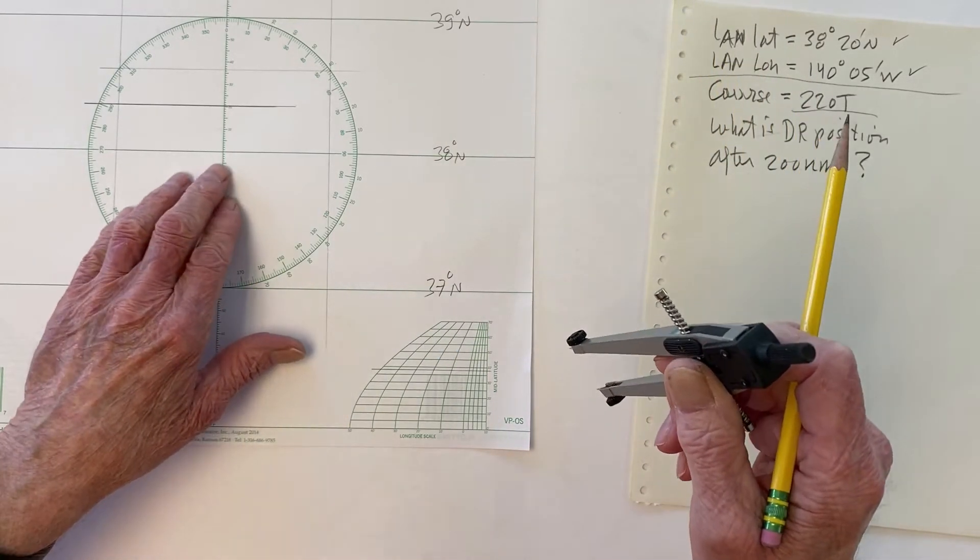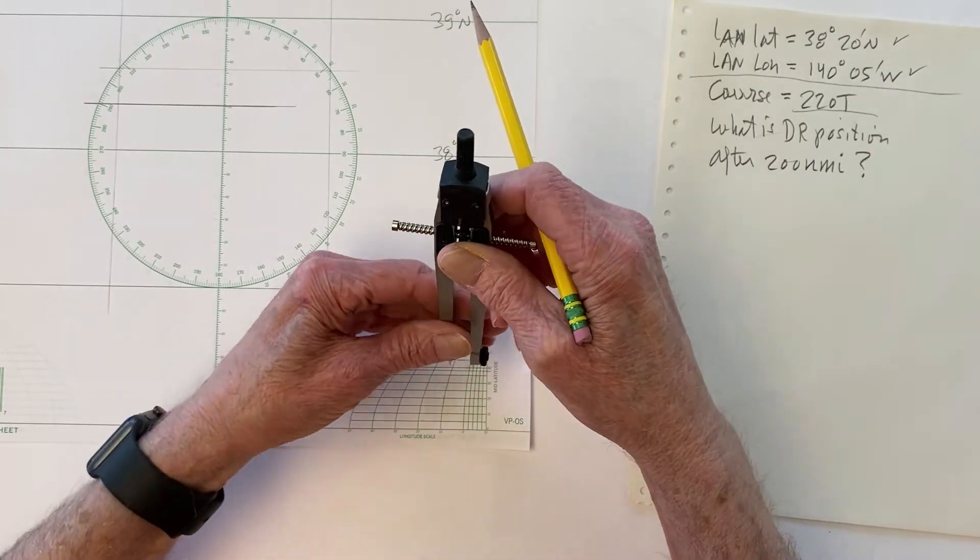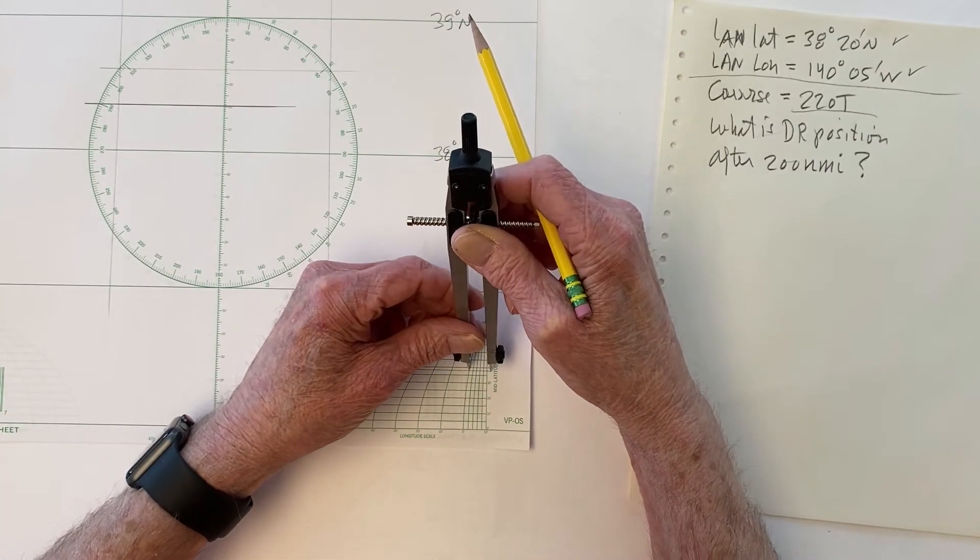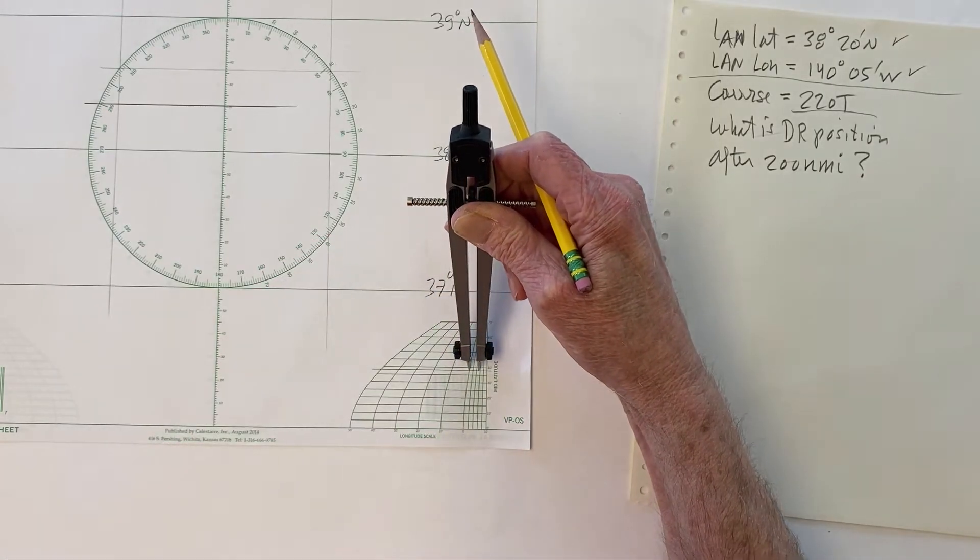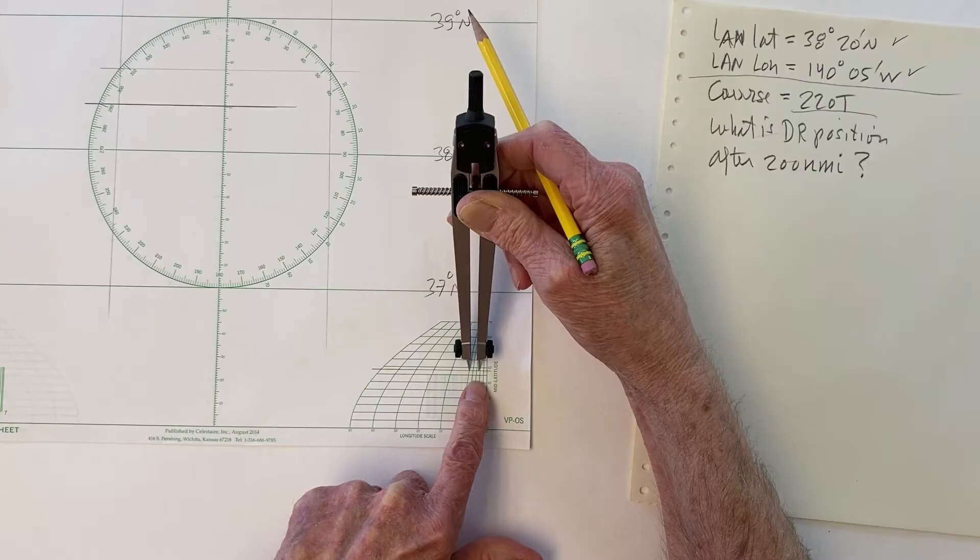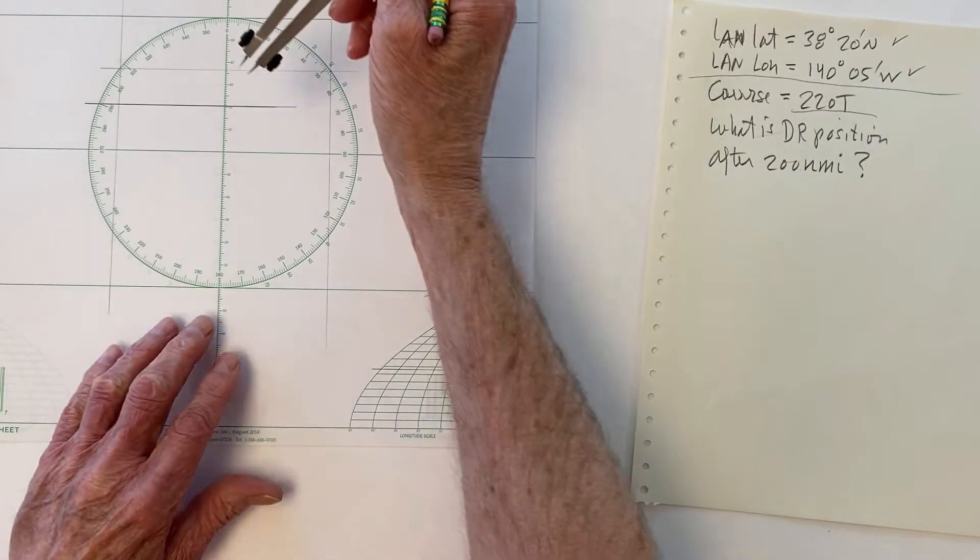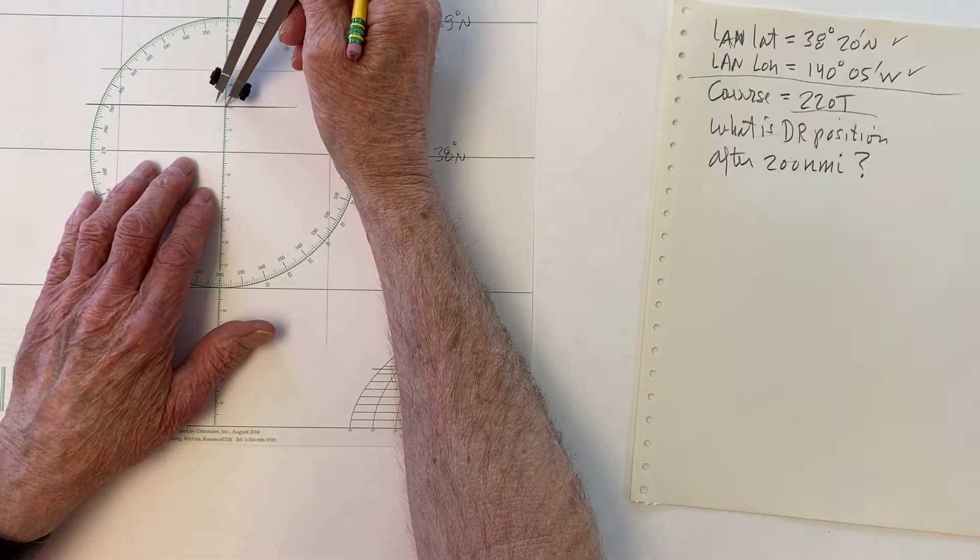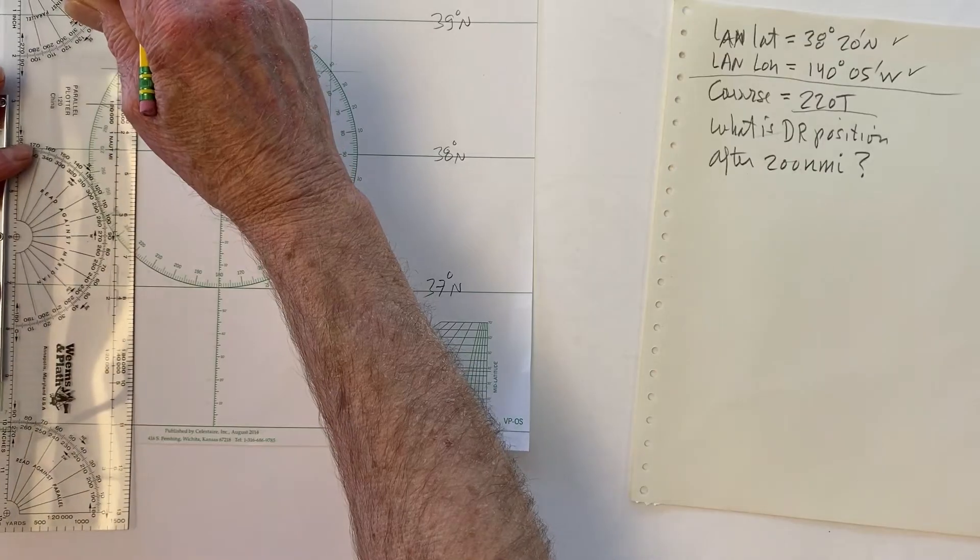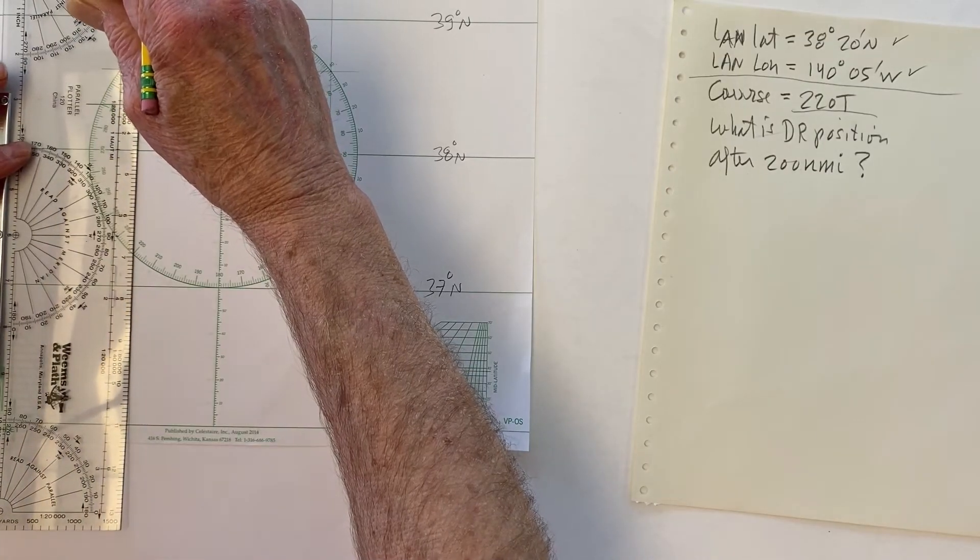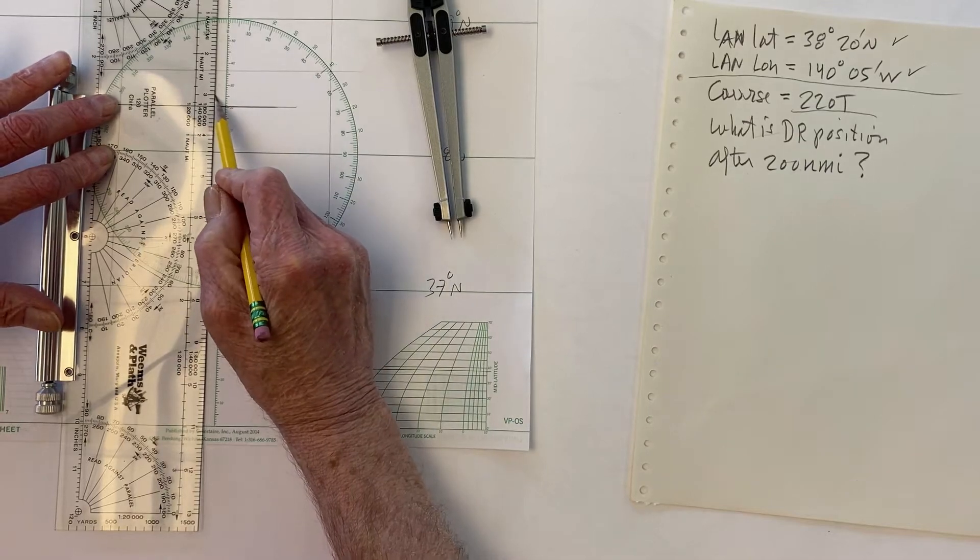But we just want 0, 5. So 0, 5 would be, each of these are 2, so that would be 2, 4, 2 and a half of these divisions. So you can't see that too well, maybe, unless I zoom in, but there's 2 and a half divisions right there. That's 5. So that's here, and then that's right here. So that's that position. I could just mark it with a dot, but generally it's a little crisper to go up here and just make a little cross mark right like that.